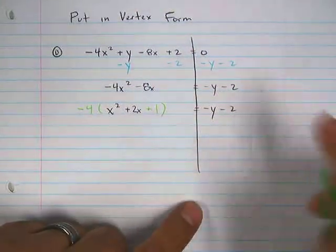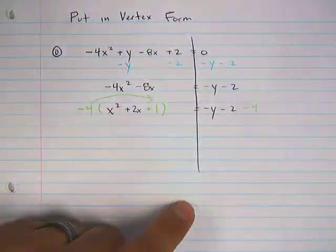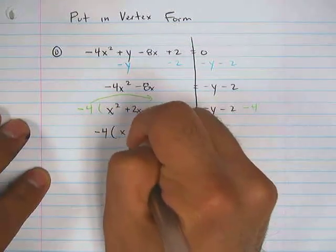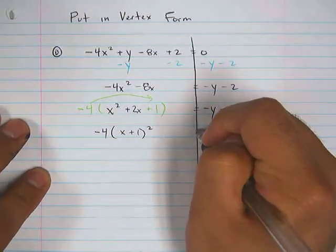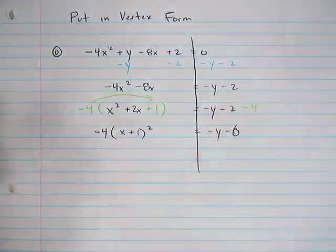However, you're not putting 1 on the other side. You're putting negative 4. It's a hidden number because you multiply these two together. Now your problem says this: -4(x + 1)² equals -y - 6.